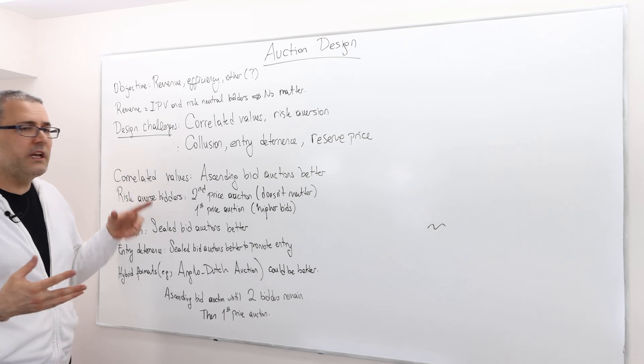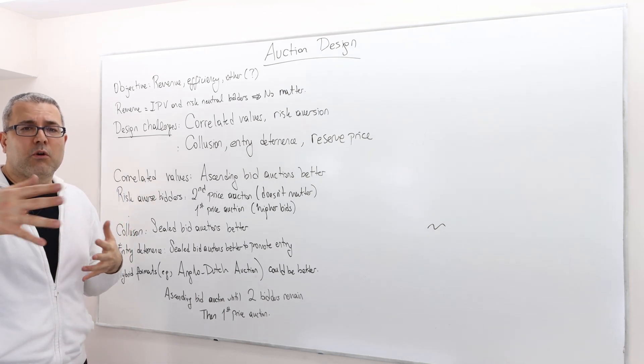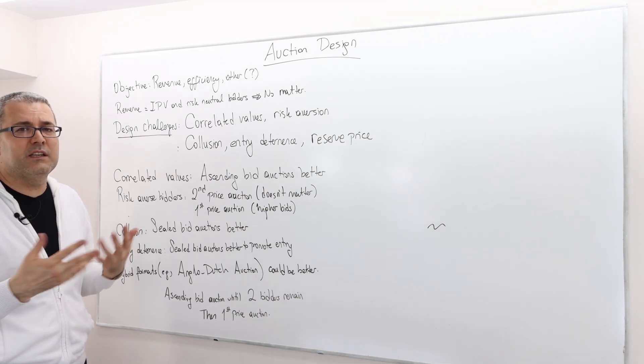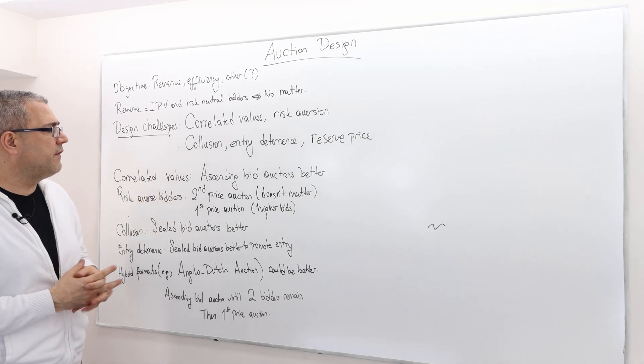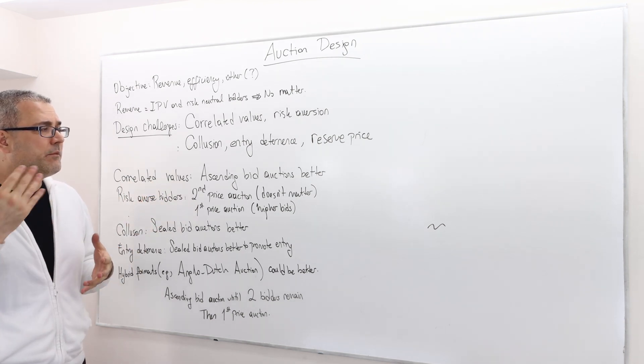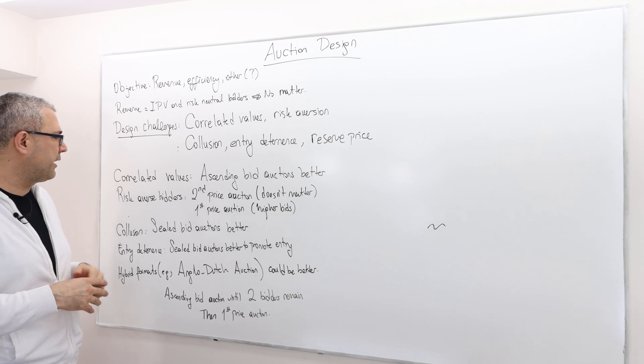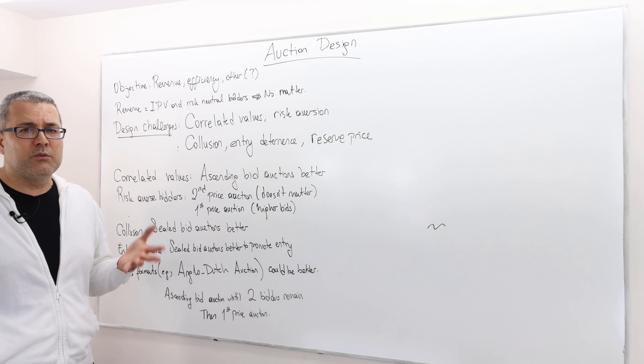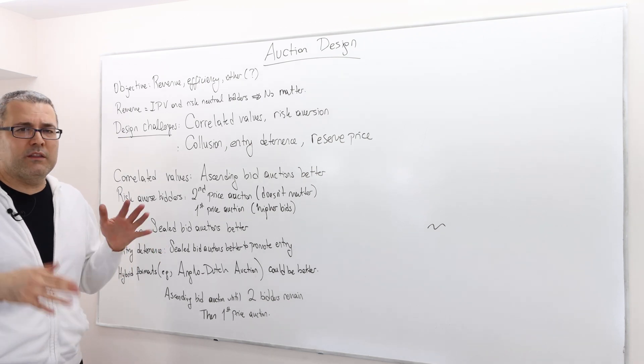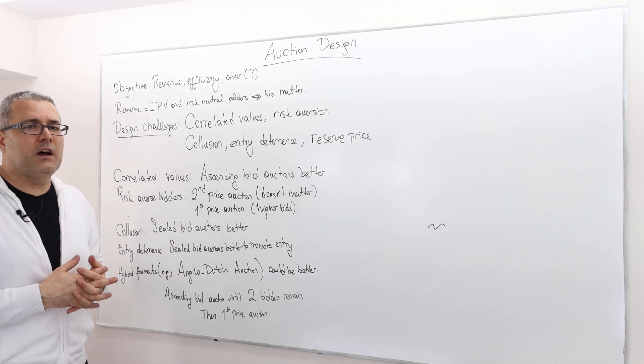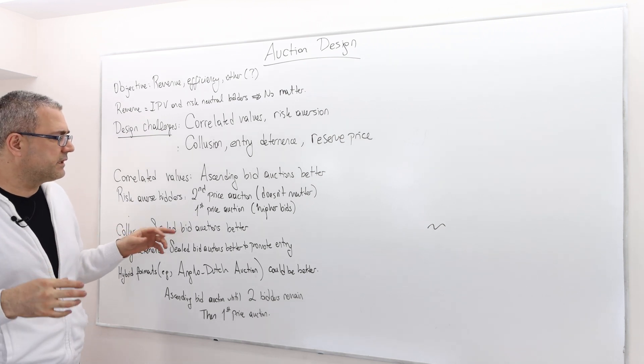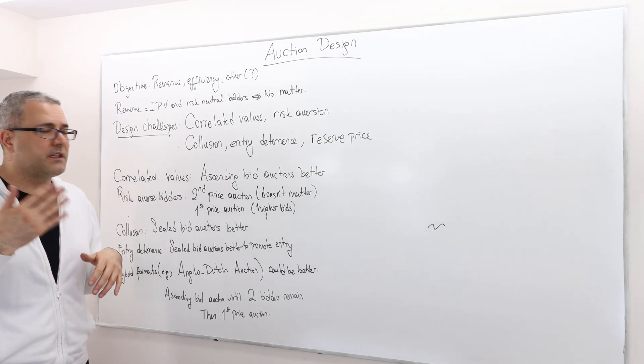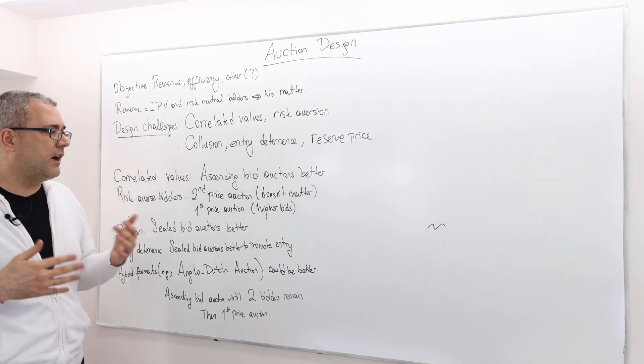In terms of correlated values, my value could be correlated to your value. Once I receive a signal, it doesn't have to be independent as in common value auctions. In the correlated value case, ascending bid auctions perform better. In the case of risk averse bidders, the second price auction makes no difference. Whether the bidders are risk neutral or risk averse, the equilibrium strategies will be the same. However, the first price auction bidding strategies will be different and risk averse bidders have higher bids.